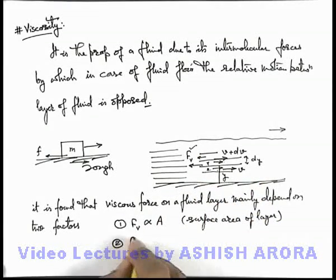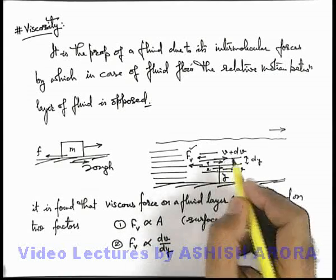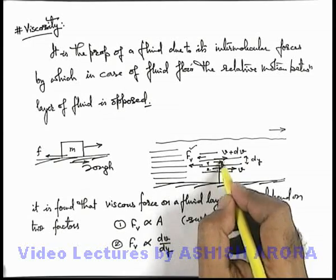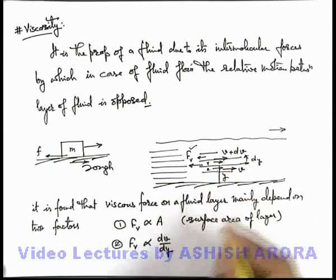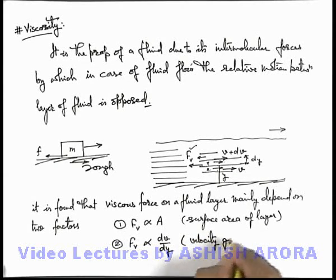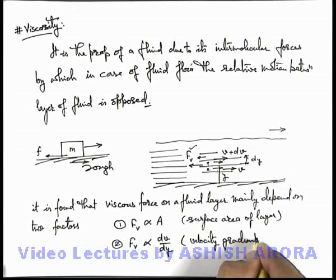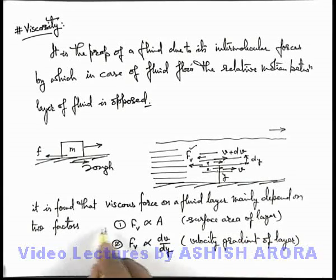And the second is this viscous force is directly proportional to the velocity gradient, which is dv over dy. That is, over a layer of width dy, if a change in speed is dv, then in this situation this dv by dy we can term as velocity gradient of layer. So on these two factors it depends.